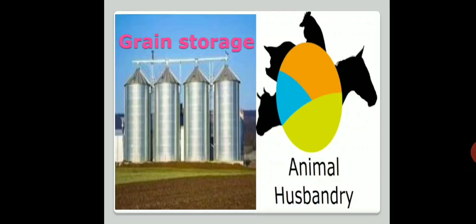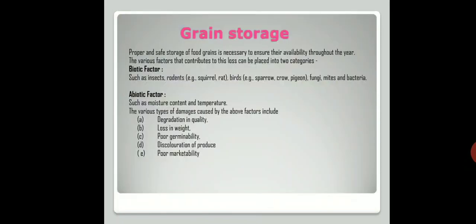In this class we are going to discuss storage of grains and animal husbandry. A large amount of grain production needs to be stored throughout the year properly. There are factors that contribute to the loss of grains. These factors are categorized into two types: biotic factors such as insects, rodents, birds, fungi, mites and bacteria, and abiotic factors such as moisture content and temperature.